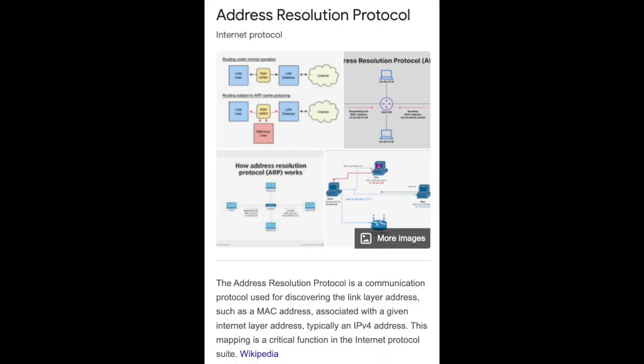ARP — Address Resolution Protocol. Address Resolution Protocol, also called ARP, is a protocol or procedure that connects an ever-changing internet protocol address to a fixed physical machine address.